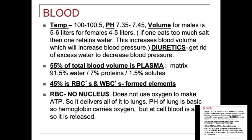Blood is made up of formed elements — 45% — which are red blood cells, white blood cells, and platelets. The non-formed elements are the plasma, which is the extracellular matrix. In plasma, 91.5% is water, 7% is proteins, and 1.5% are solutes. That's why hydration is so important. A general rule: take your body weight, cut it in half, and drink that amount in ounces per day.